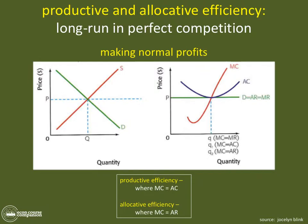Here is the long-run productive and allocative efficiency for firms making normal profits. In the long run under perfect competition, the end of the story is always that firms make perfectly normal profits.